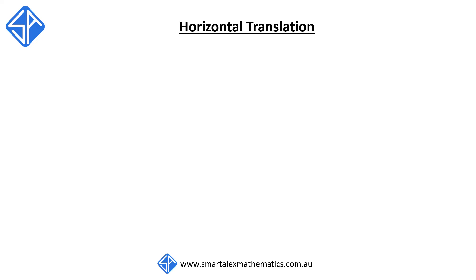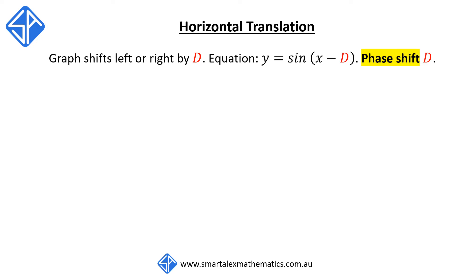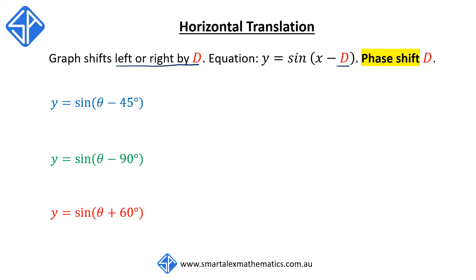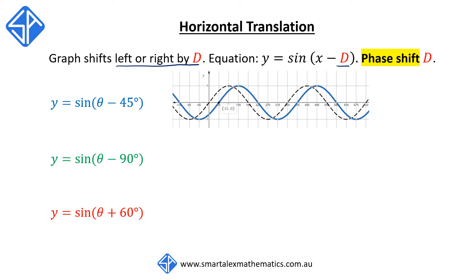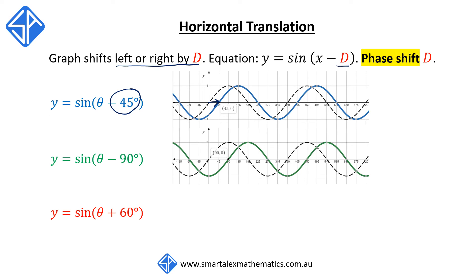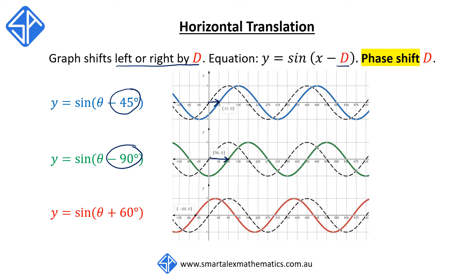The fourth transformation is horizontal translation. The graph shifts left or right by d, and the equation will be of the form y equals sine of (theta minus d). The value of d is called the phase shift. For y equals sine(theta minus 45°), the minus means the graph shifts right by 45 degrees. For y equals sine(theta minus 90°), the graph shifts right by 90 degrees. For y equals sine(theta plus 60°), because it's a plus, the graph shifts left by 60 degrees.